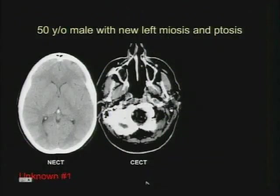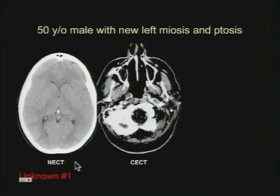We're going to start now, and for the rest of the neuro section, we're going to do some unknown cases. The first case is a 50-year-old male with new left-sided miosis and ptosis. You have a non-contrast CT, and initially this patient only had a non-contrast CT and a contrast-enhanced CT. But based on the history, the patient needs something else. So what other exam would you order?